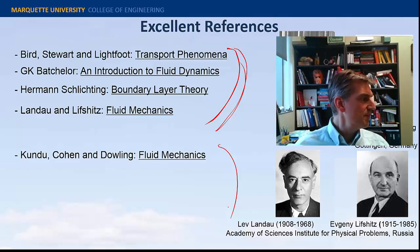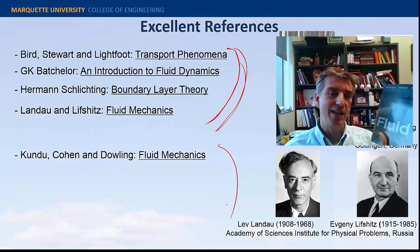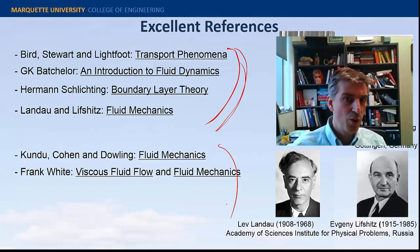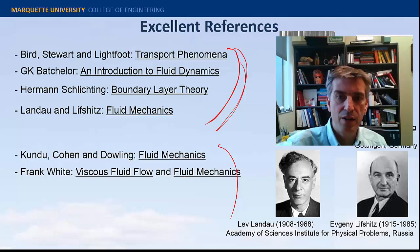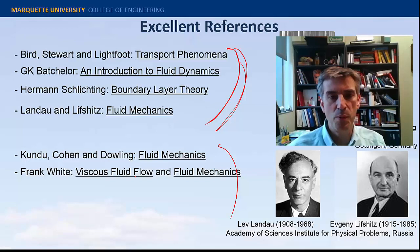Kundu, Cohen, and Dowling is a classic or becoming a classic in fluid mechanics — a modern-day amalgamation of work. Frank White has two books: Viscous Flow and the undergraduate Mechanics of Fluid Mechanics. Both are really, really nice readable texts, and he draws heavily from Batchelor and Schlichting. I really like the Viscous Flow graduate-level book, which is now in its third or fourth edition.